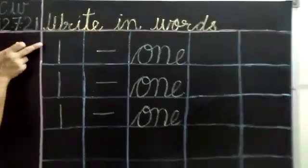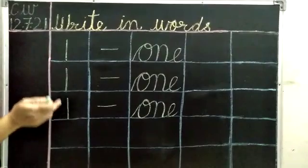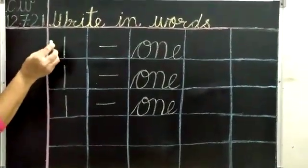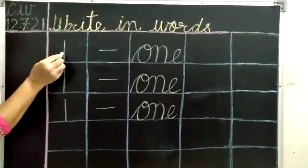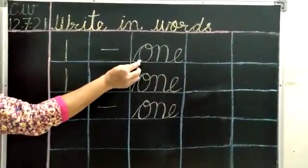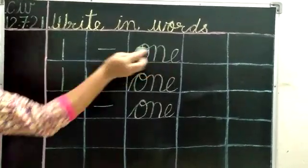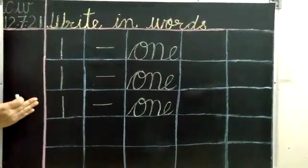Children, you have to write a full page in your maths notebook and learn it also. Once again I'm repeating: 1. Spelling of 1 is O, N, E, 1. Learn it daily, children. Thank you.